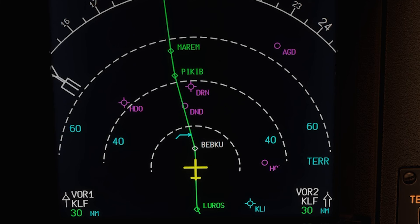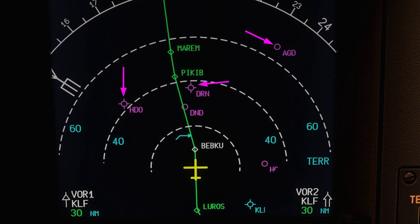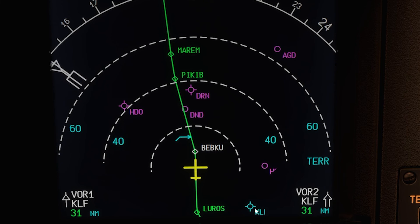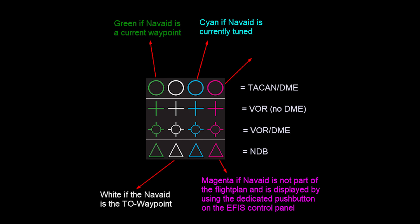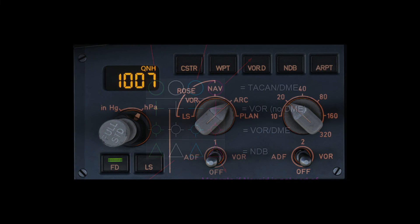Now let's look at some NAV aid symbols on the NAV display. You can see some magenta circles, some with lines on them. There's a wide range of different NAV aid symbols: circles for TACAN DME, crosses for VOR without DME, circles with lines at the sides for VOR DME, and triangles for NDBs. The color is also important: green means the NAV aid is the current waypoint on the flight plan route; cyan means it is currently tuned either manually or automatically; white means it is the TO waypoint on the routing; and magenta means the NAV aid is not part of the flight plan and is only displayed because you have pushed the dedicated push button on the EFIS control panel.